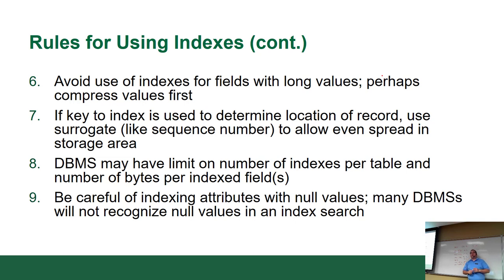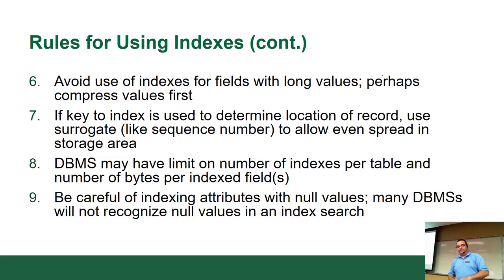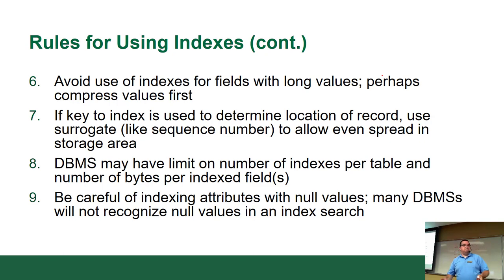Depending on the server, if you try to index too many things it'll bomb out with an error like 'maximum limit reached.' There's no single universal error message — it depends on the server. Normally, you want to look through the documentation to see what the limits are. When there are actual physical limits on the number of indexes allowed, it's actually a good thing because it forces you to be thrifty with your indexes. You don't want to get too creative. That's the rules for using indexes: don't index big things, limit number of indexes, don't index nulls.